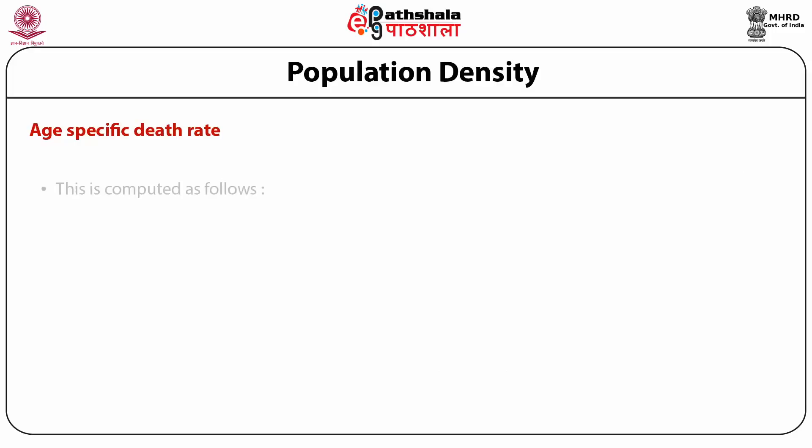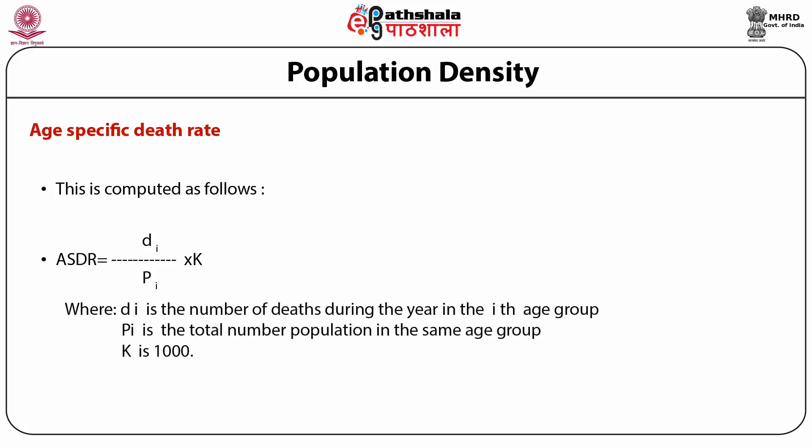Age-Specific Death Rate. To compute specific rates, it is necessary to have data divided into classes. Age-specific death rates are calculated as D/P × K, where D is the number of deaths during the year in the specific age group, P is the number of people in the same age group, and K is a constant of 1000 or 100.